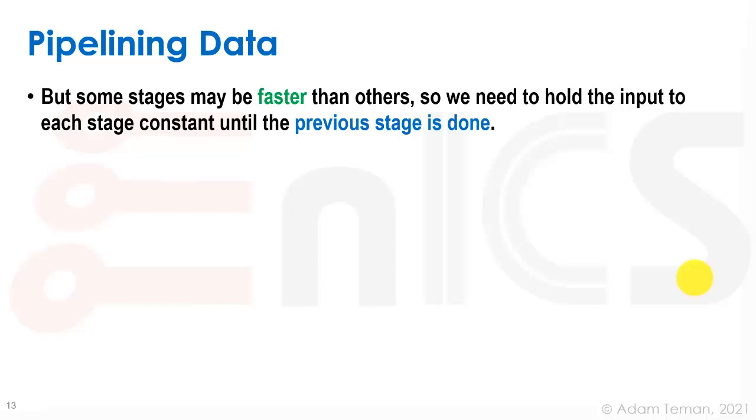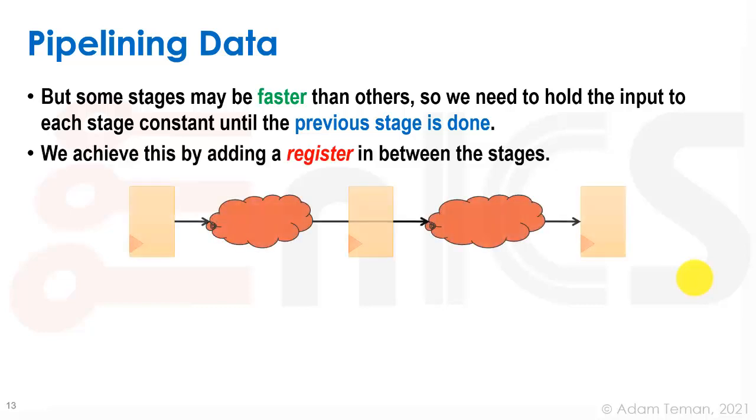Some stages may be faster than others. In our previous example, we showed that we just divided everything in a very equal way. And that's the best thing that we can do. But we actually can't usually do that in life. So what we need to do is hold the input to each stage until the previous stage is done. And the way to do that is by adding a register.